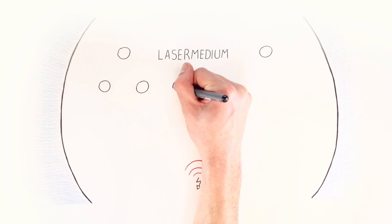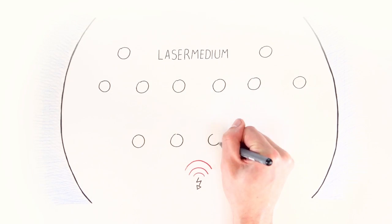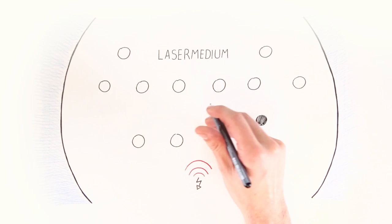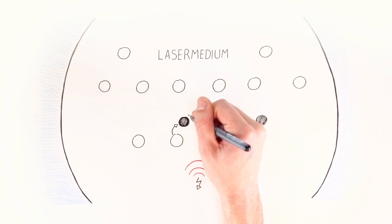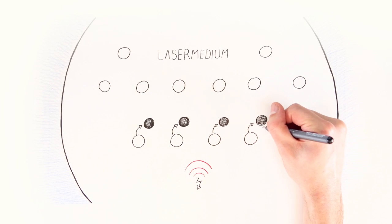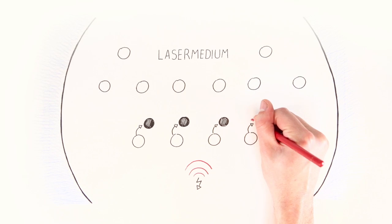The laser medium consists of particles that are in their basic state. The pump feeds energy into the particles, and they rise to a higher energy level. If any of these particles then falls back into their basic state, energy is released in the form of a photon, also called light quantum.